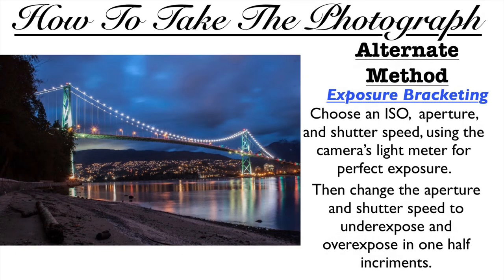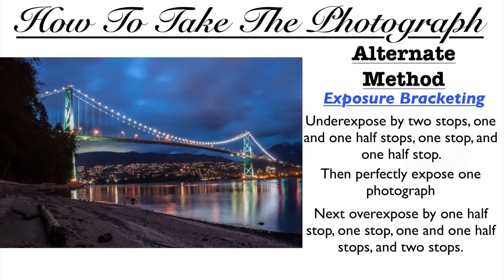Alternate method: exposure bracketing. Choose an ISO, aperture, and shutter speed using the camera's light meter for a perfect exposure. Then change the aperture and shutter speed to underexpose and overexpose in one-half stop increments. For example, underexpose by two stops, one and a half stops, one stop, and one-half stop. Next, make one perfect exposure. Finally, overexpose by one-half stop, one stop, one and a half stops, and two stops.